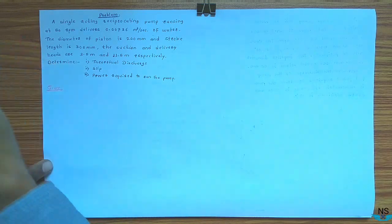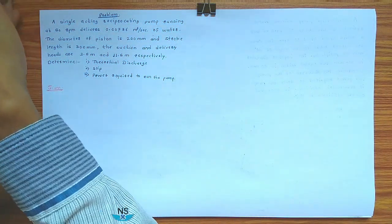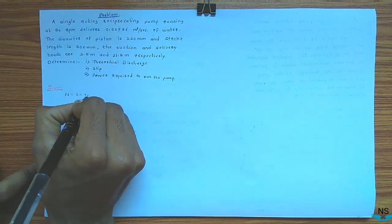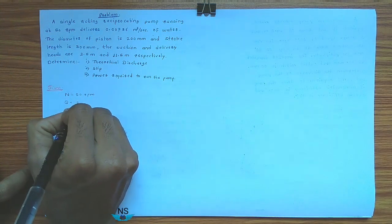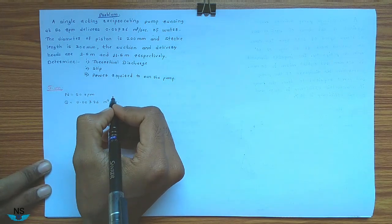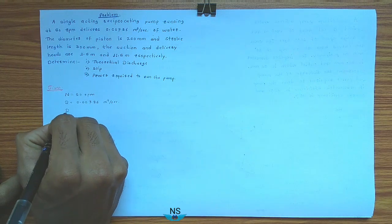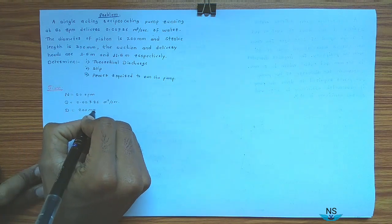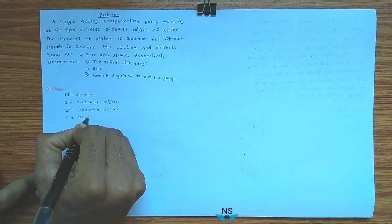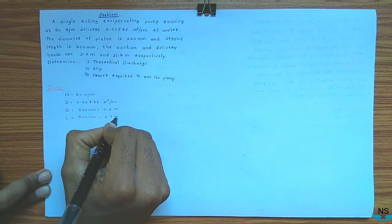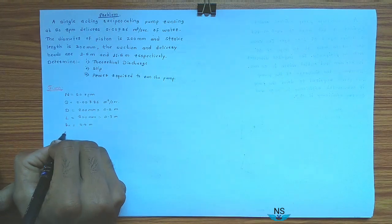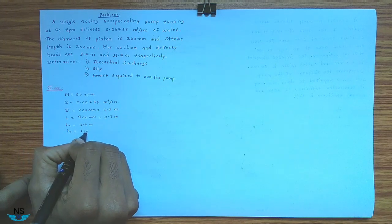Given: a single acting reciprocating pump running at 50 rpm delivers 0.00736 m³ per second. The diameter of piston is 200 mm, that is equal to 0.2 meter, and stroke length L is equal to 300 mm, that is equal to 0.3 meter. The suction head HS is equal to 3.5 meter and delivery head HD is equal to 11.5 meter.